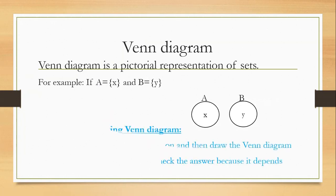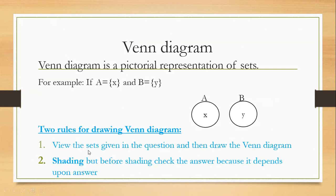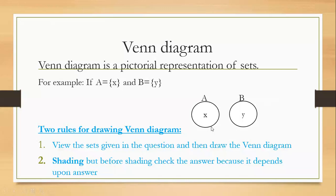Here I am going to share two rules for drawing the Venn diagram. Rule number one: view the sets given in the question and then draw the Venn diagram. Rule number two is shading. Before shading, check the answer, because shading depends upon the answer. For example, here nothing is shaded because the question is incomplete. So first, view the question and draw the diagram.